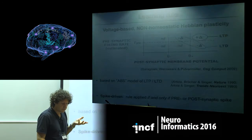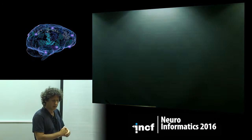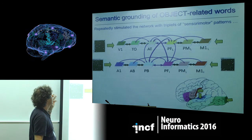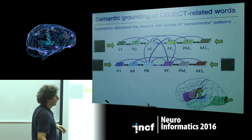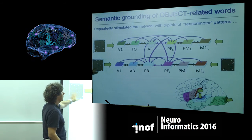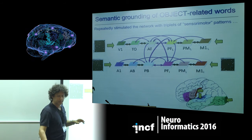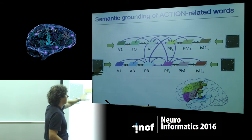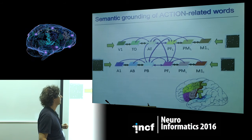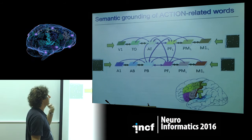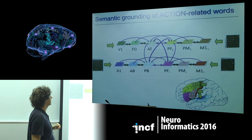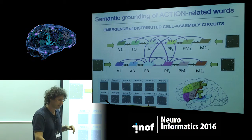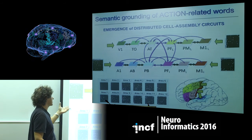To simulate the semantic grounding of object-related words, we presented the network with triplets of patterns interpreted as sensory motor patterns. For object-related words, we used co-occurrence of auditory, articulatory, and visual perception. For action-related words, we stimulated the network with auditory, articulatory, and motor cortex patterns representing movement execution. After many repetitions — around 2,000 to 3,000 presentations — we observed the emergence of cell assembly circuits, the theoretical constructs that had been hypothesized.